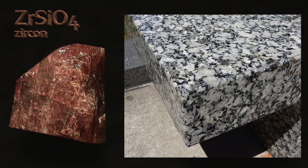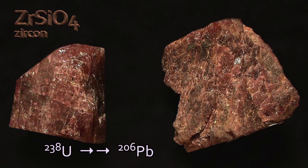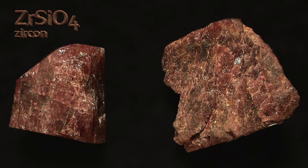Zircons don't pick up much lead when they form — mainly uranium. And so the uranium over time will decay to lead. Specifically, uranium-238 decays to lead-206. There can be a small amount of lead in the zircon when it forms, but fortunately that's going to be primarily non-radiogenic forms like lead-204. Essentially, we can measure very carefully the concentrations of uranium and lead and their isotopes in a chunk of zircon and determine how old that zircon is.